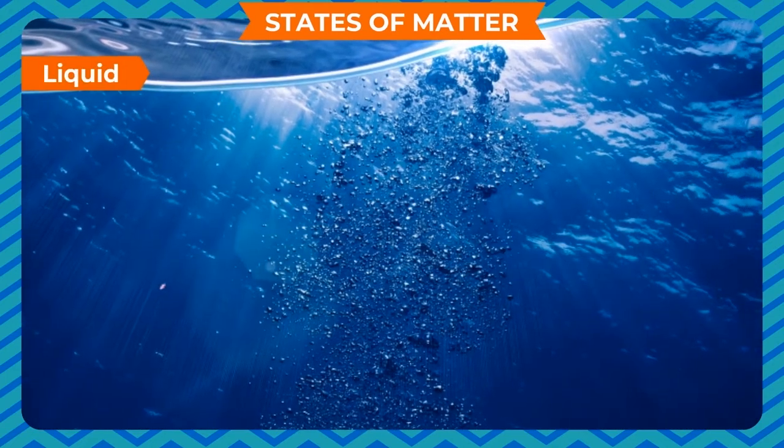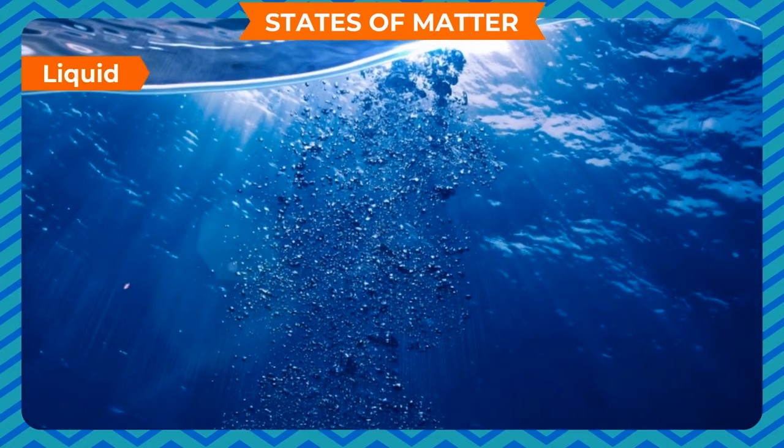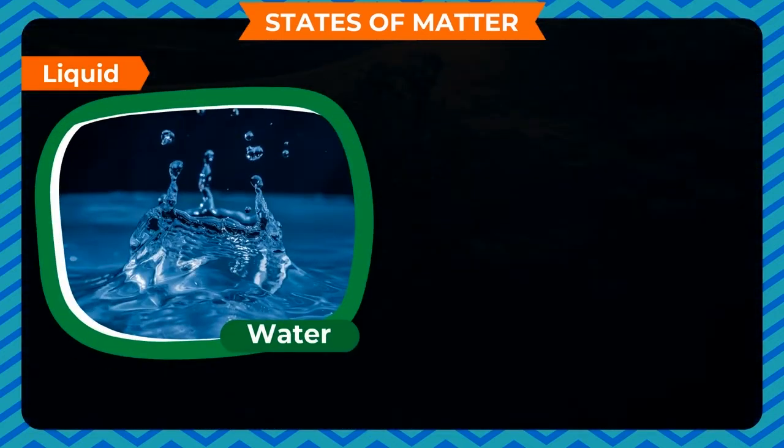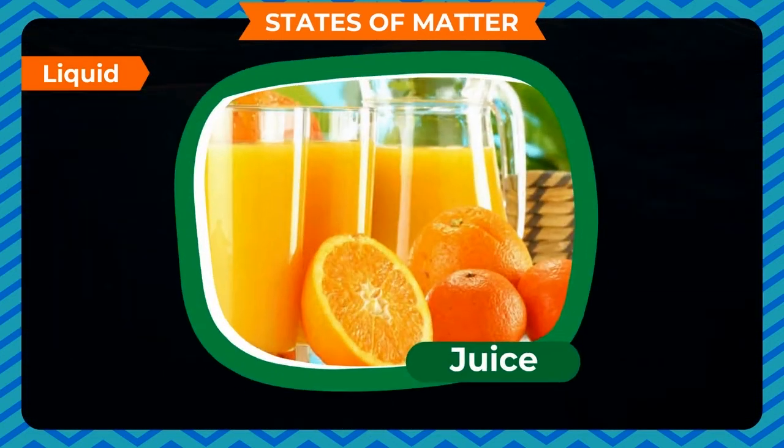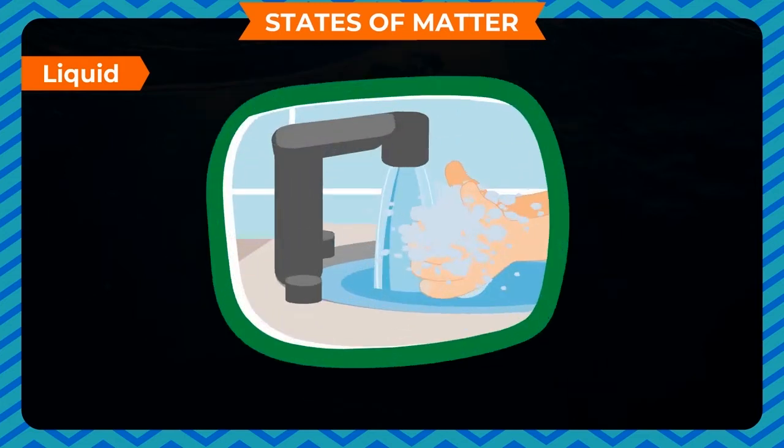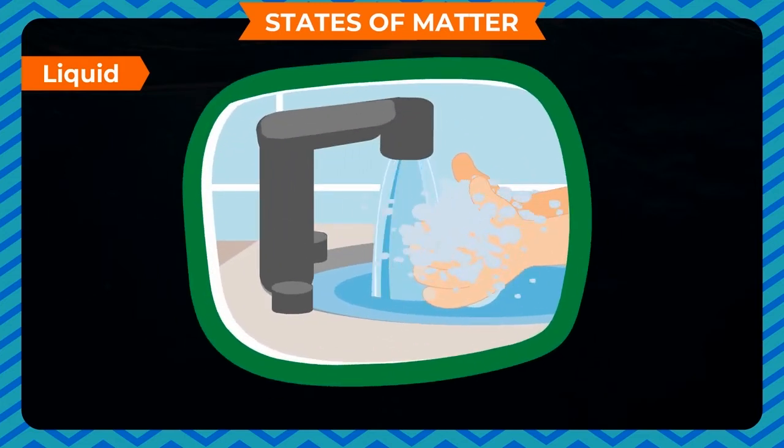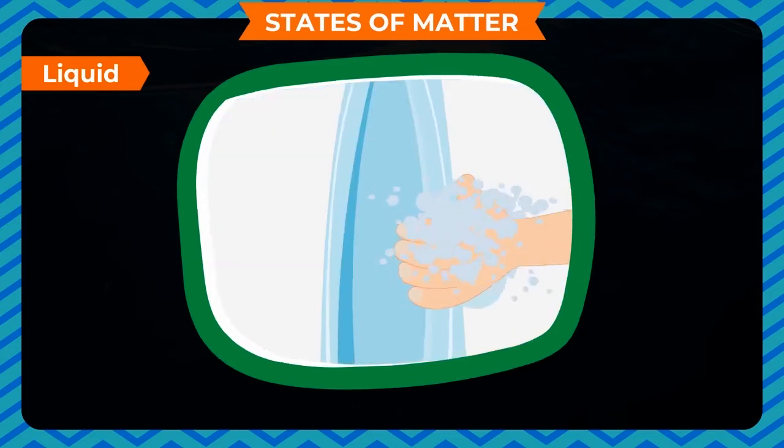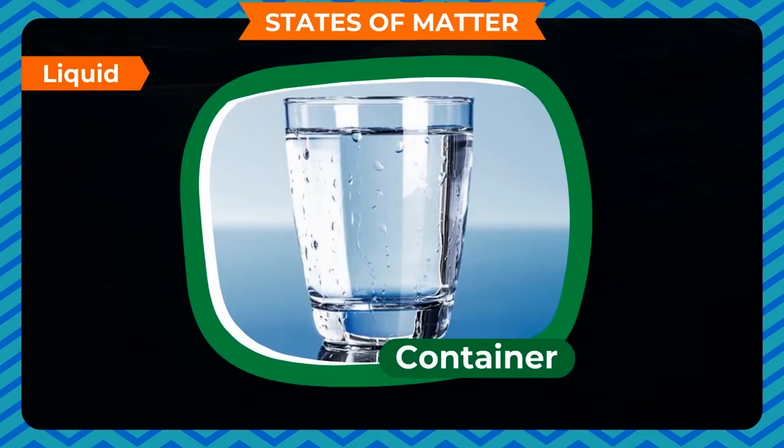Liquid. Another state of matter is liquid. We drink water, milk and juice. All of these are liquids. We cannot hold them in our hand like solids. They do not have a fixed shape. They take the shape of the container in which they are kept.